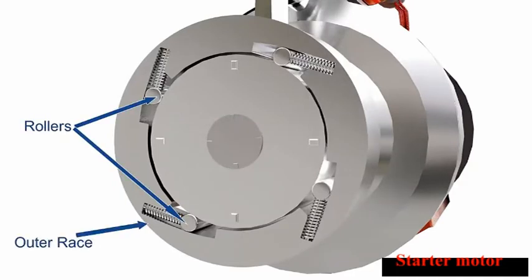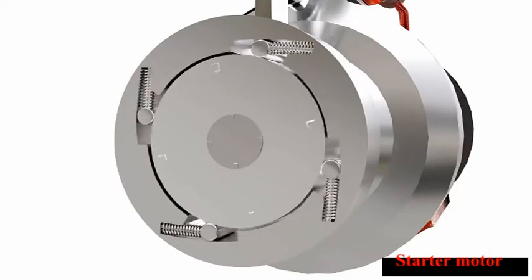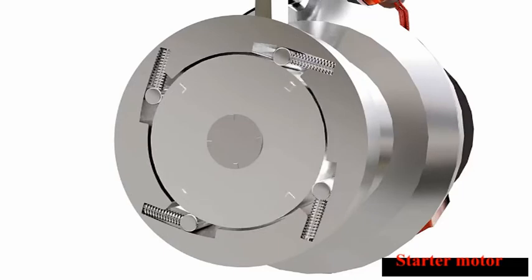The one-way clutch has a set of rollers installed between the outer and inner races. When the outer race is rotated by the motor, the rollers get trapped and transfer power to the pinion. As soon as the engine is started and drives the pinion at a high speed, the rollers get released and power transfer is stopped.